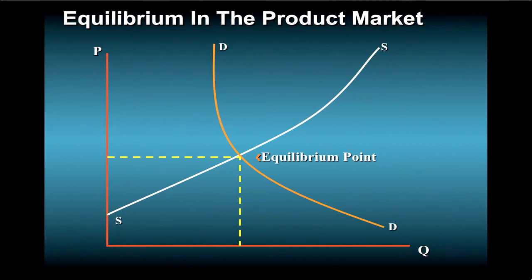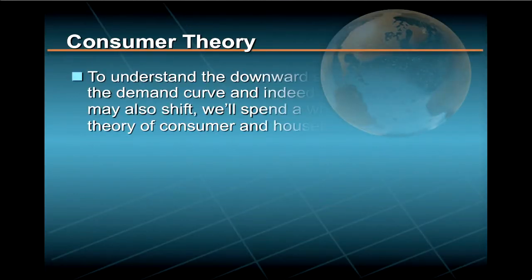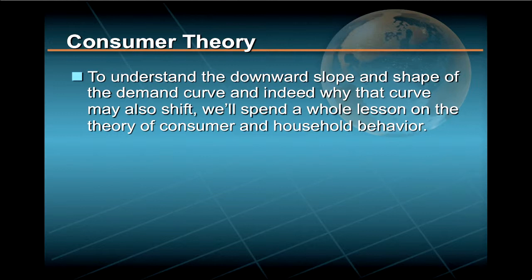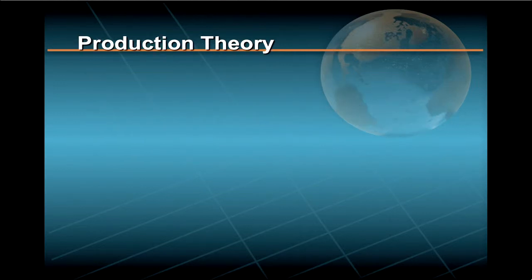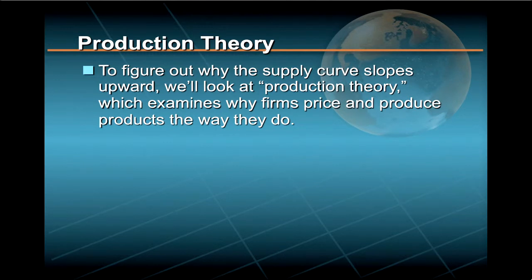In order to understand exactly why this equilibrium happens, we're going to spend a lot of time in the first part of our studies understanding each of the components of these curves. To understand the downward slope and shape of the demand curve, and indeed why that curve may also shift, we'll spend a whole lesson on the theory of consumer and household behavior. By the same token, to figure out why the supply curve slopes upward, we'll look at so-called production theory, which examines why firms price and produce products the way they do.